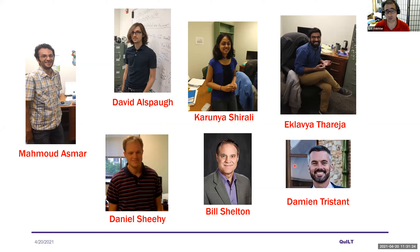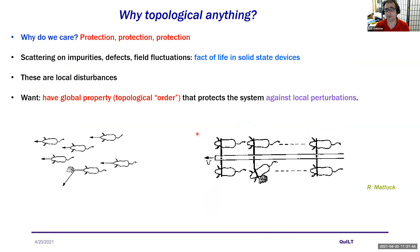If I don't get to talk much about my own research, I want to acknowledge from the beginning the people who contributed to it. There are two senior collaborators: Dan Sheehy and Bill Shelton. There are two postdocs at LSU — one current postdoc with Bill, Damian Tristan, and my former postdoc Mahmoud Asmar — as well as three students: Karin Yashirelli, Clavia Tareja, and David Alspaugh.